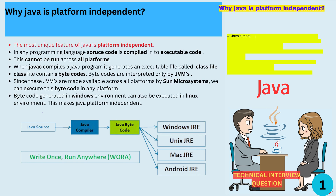Why is Java platform independent? Can you explain it in simple terms? The most unique feature of Java is its platform independence. In most programming languages, source code is compiled into executable code. This code cannot be executed across all platforms.